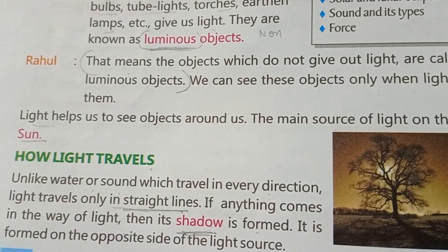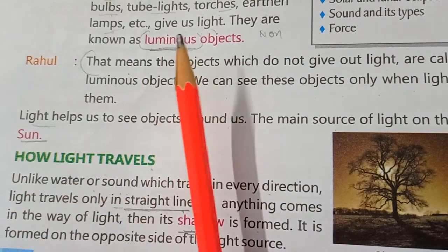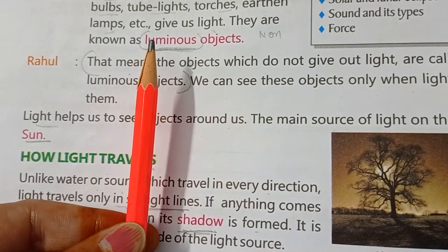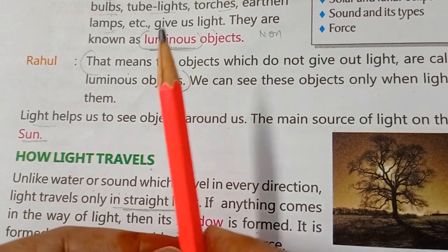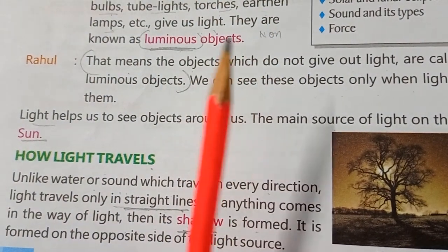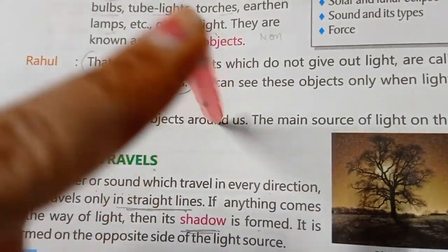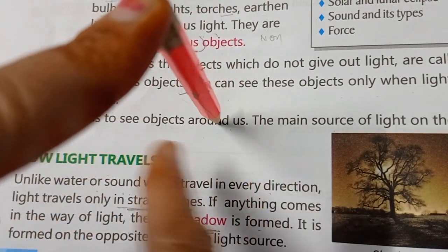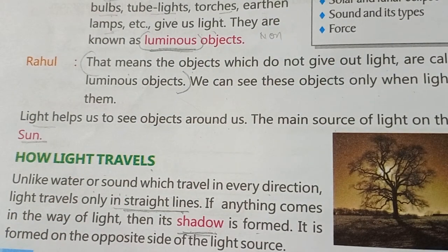Let's look at this pencil. You can see the pencil, and its shadow is on the opposite side. When light comes from one direction and the pencil blocks it, the shadow forms in the opposite direction. It is always formed on the opposite side of the light source.